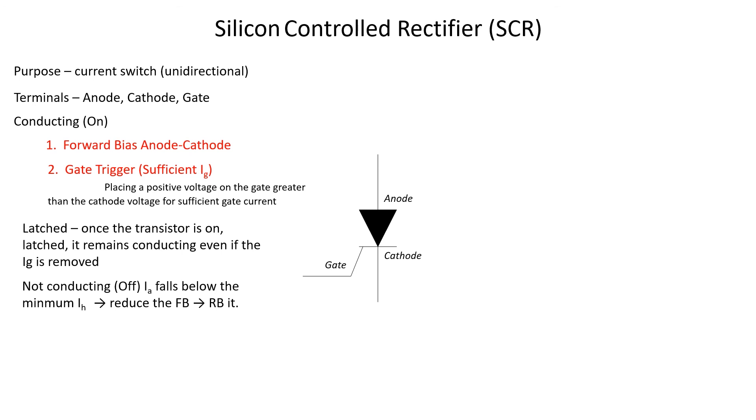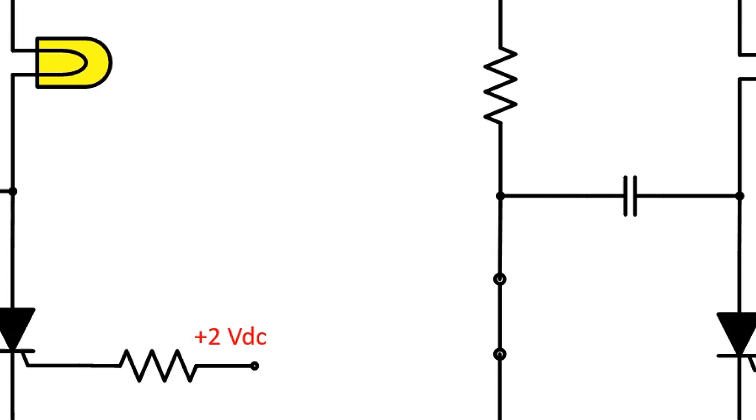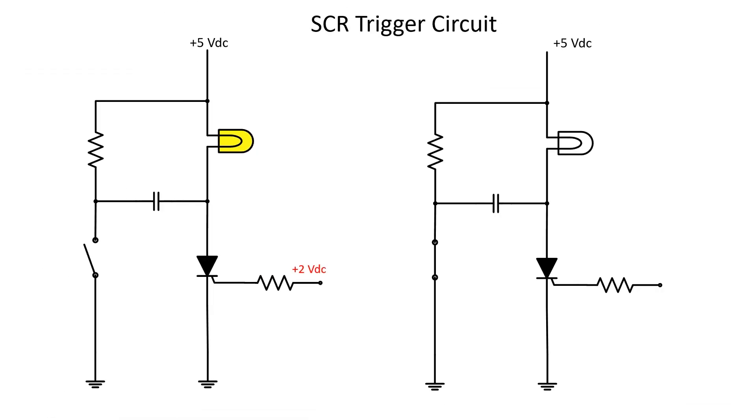Now that you understand the SCR, let's put it into a circuit. Take a look over at the circuit on the left. With positive 5 volts applied and positive 2 volts on the gate, we have an SCR that is meeting both its requirements needed to conduct. When an SCR is conducting, it will have a voltage drop of 0.7 to 1 volt, so a multimeter would read something like this if it were on.